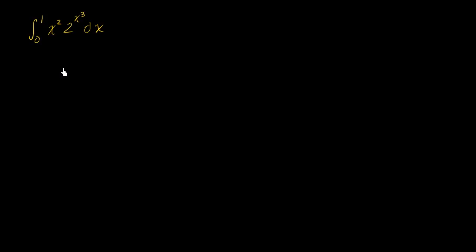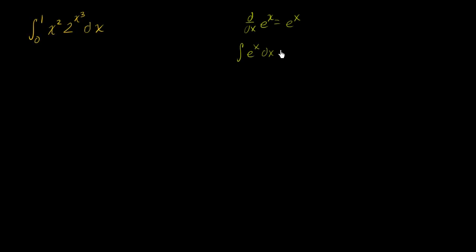So assuming you've had a go at it, there are a couple of interesting things here. The first thing my brain does is say: I'm used to taking derivatives and antiderivatives of e to the x, not some other base to the x. We know that the derivative with respect to x of e to the x is e to the x, or that the antiderivative of e to the x is equal to e to the x plus c.